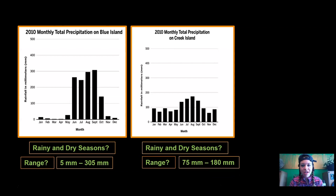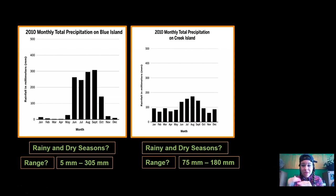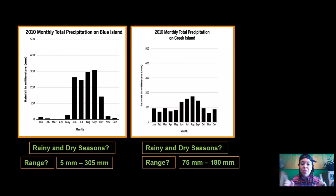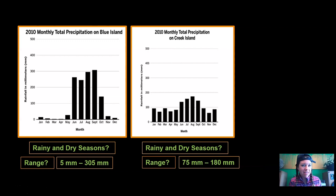Here's how I estimated the range for Creek Island: about 75 millimeters to about 180 millimeters. For the shortest month, November had the least amount of rain. The bar was between zero and 100, but way past zero — even past halfway. I know half of 100 is 50, so it must be more than 50, but not so close to 100 that it could be 90. So I estimated about 75. For the tallest month, August, the bar goes up to between 100 and 200, and it looks like even more than 150, which would be in the middle. So I estimated about 180.